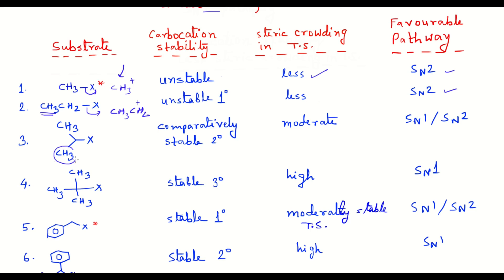If we add one more methyl group by replacing a hydrogen atom, that results in a secondary carbocation — a borderline situation that can go either SN1 or SN2. For SN1, the carbocation is comparatively stable due to the plus-I effect and hyperconjugation of two methyl groups. For SN2, two methyl groups do not make the transition state highly energetic, so moderate SN2 reactivity will also be observed. This molecule can go either SN1 or SN2 based on the choice of solvent.